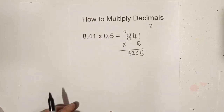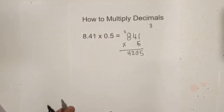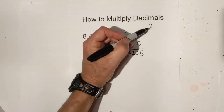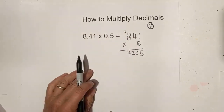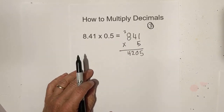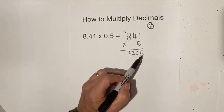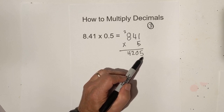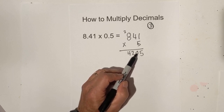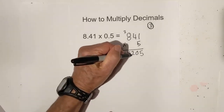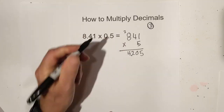It's 4205. Then for step three, remember the original three that we counted — you want the same number to the right of the decimal. So to have three to the right of the decimal, start counting from the far right: one, two, three. The decimal goes right there.